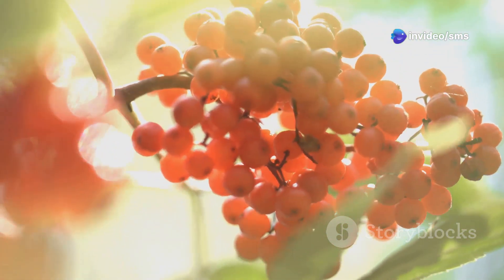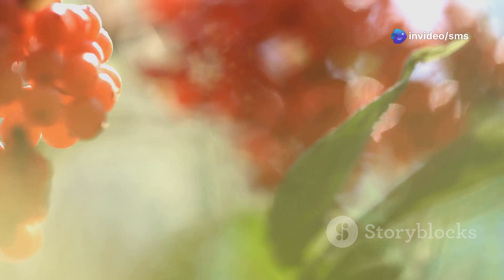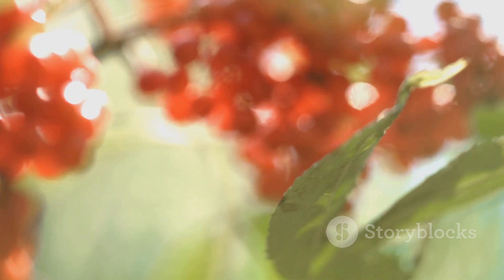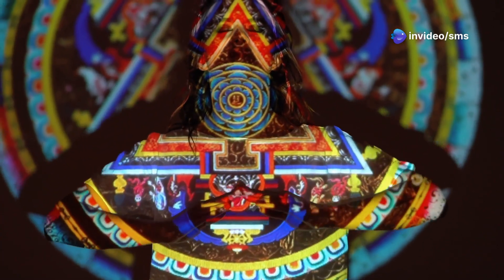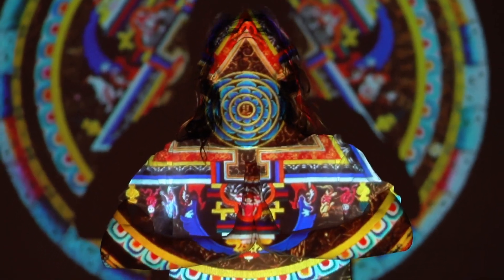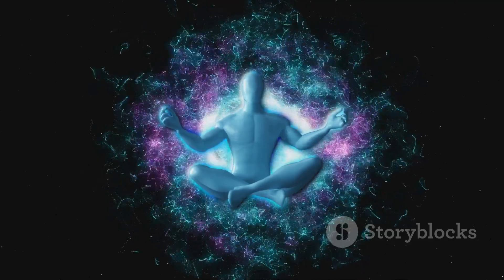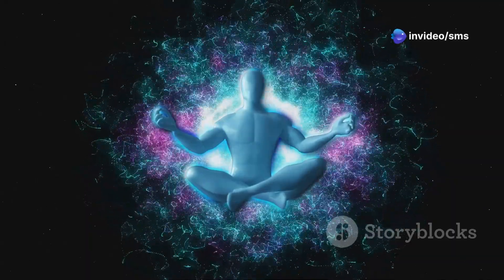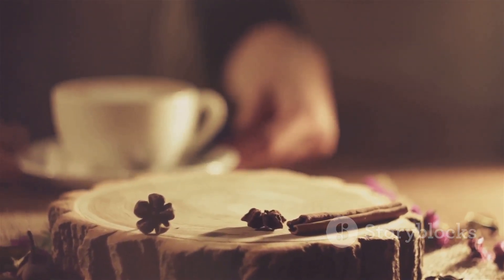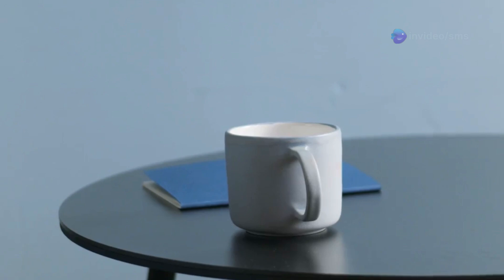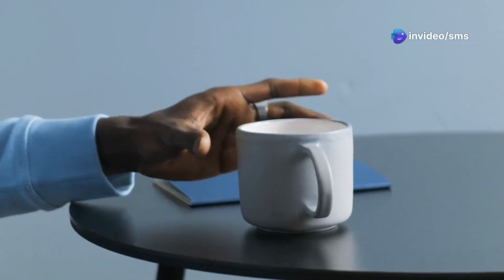For instance, an organism that perceives a nutritious fruit as bright red is more likely to identify and consume it, increasing its chances of survival regardless of whether the fruit is actually red in some objective sense. Hoffman also explores how different sensory modalities such as vision, hearing, and touch combine to create a cohesive perception of reality. For example, vision tells you the cup's color and shape, hearing the sound it makes when placed on a table, and touch its texture and temperature. These combined perceptions create a coherent experience of a coffee cup that is useful for interacting with the object even if it doesn't reflect the cup's true nature.